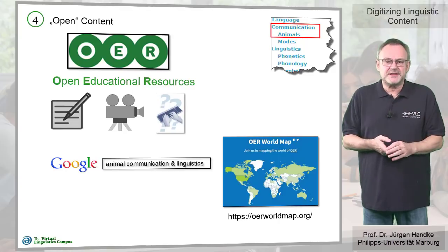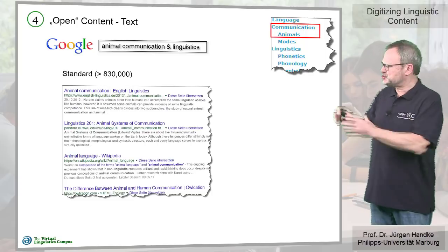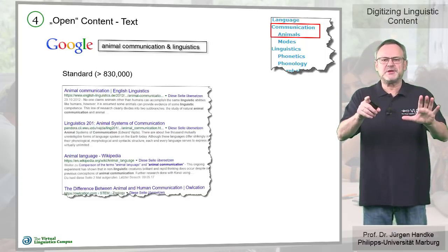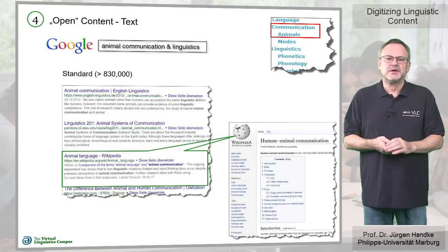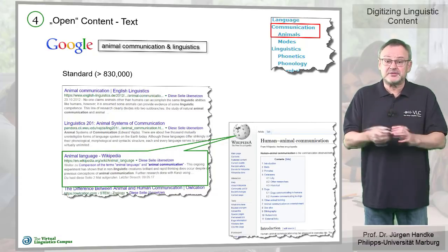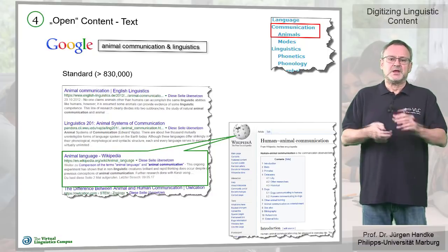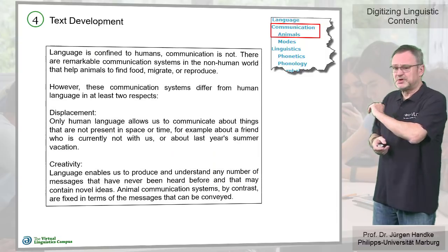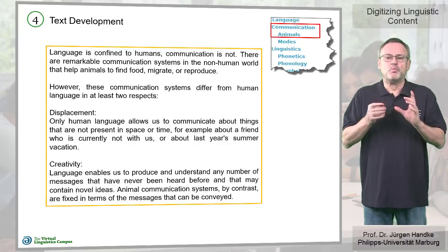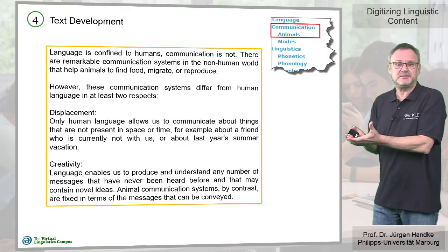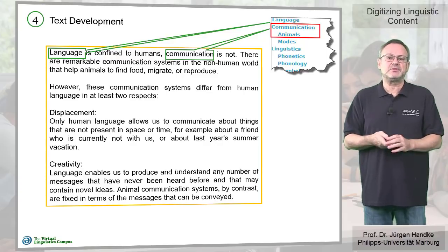Let's see whether we find some text first. With a simple text search we quickly find several thousands of websites — far too many to look at. My suggestion: start with Wikipedia and, if scientifically adequate, modify that text in such a way that you adhere to all copyright regulations. When you construct the text, whether from scratch or on the basis of web sources, keep a balance between modularity and reusability, and cohesion — that is linguistic connectivity with other texts in the same learning unit.